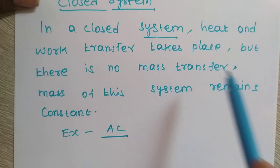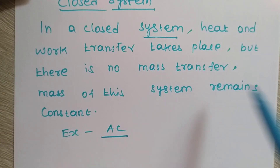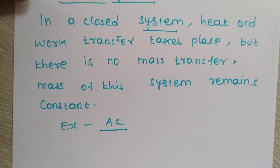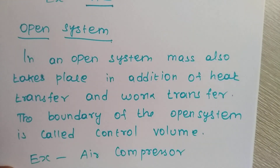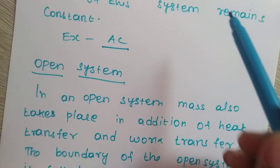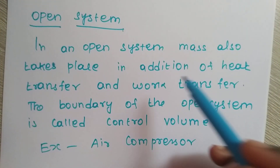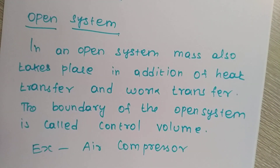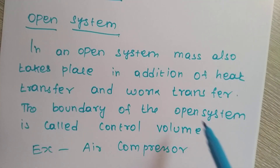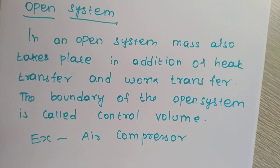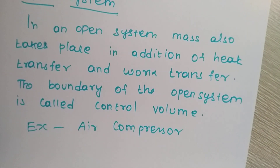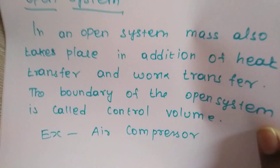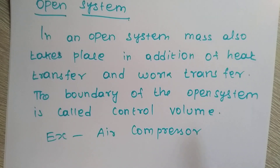Next is the open system. In an open system, unlike a closed system, mass is also transferred in addition to heat and work. Examples of open systems include an air compressor, a motor, a cycle or two-wheeler, and mechanical shafts.